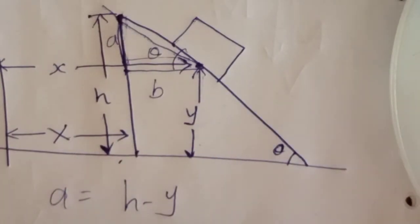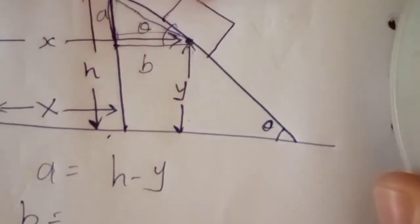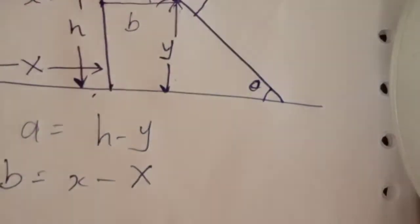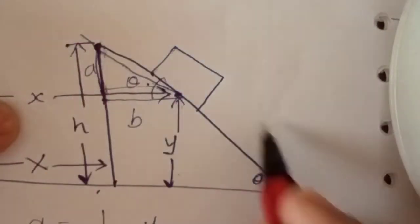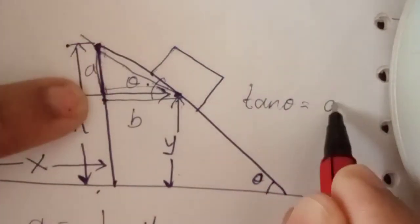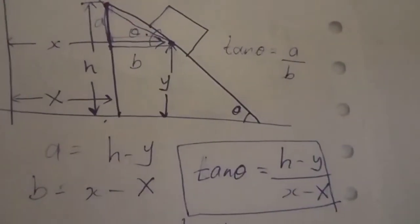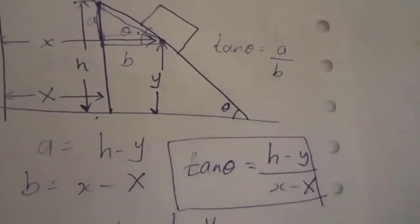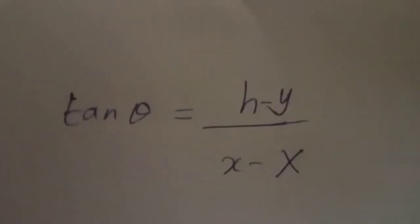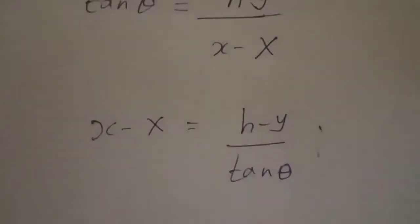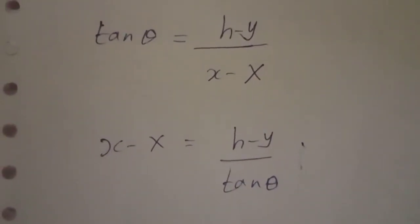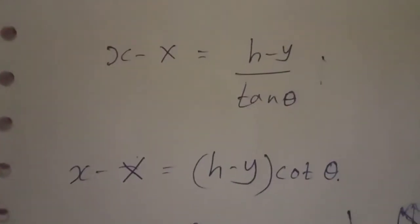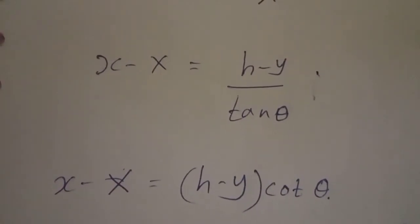Now, x minus x. You have a width, so we have to rearrange this. x minus x is equal to (h minus y) divided by tan theta. So x minus x is equal to (h minus y) times cos theta.